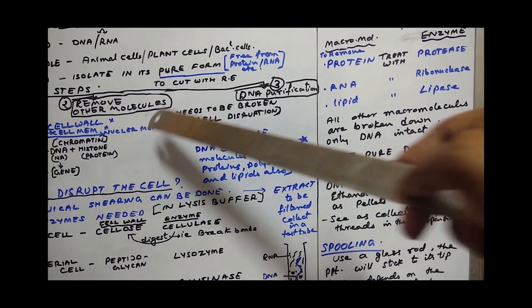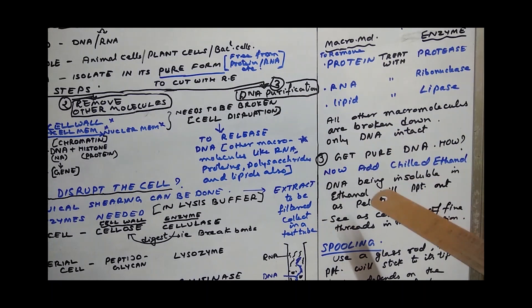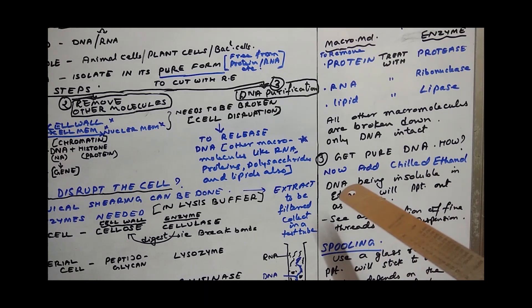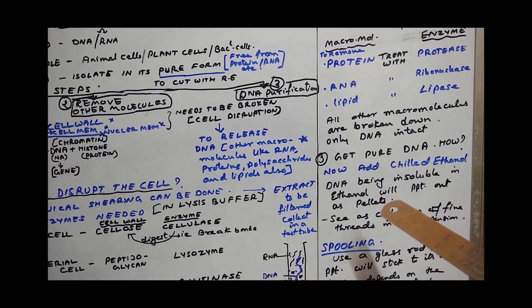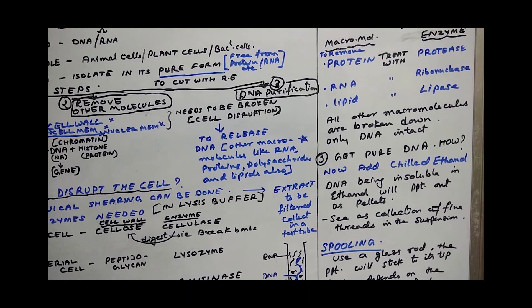The third step is DNA purification. How do we go about DNA purification? To get pure DNA, you add chilled ethanol - ethanol you keep chilled in the freezer. DNA being insoluble in ethanol will precipitate out as pellets. It will form long thread-like structures in the vial. You can see those collection of fine threads in the suspension.